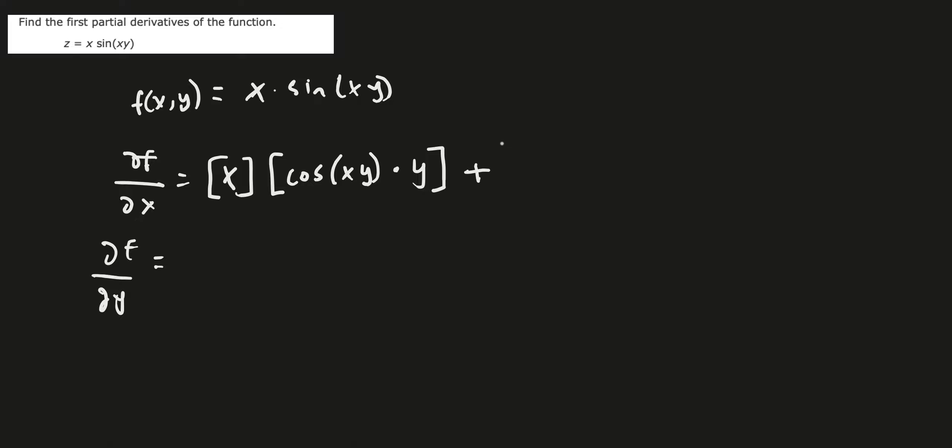But you're not done because you have to add that to the derivative of x. This is the easier one. It's just 1 and then times leaving sine of xy alone. And is this it? Well, really it is because you have x times sine of xy and you're taking the derivative of this stuff. You can do what I just did and it's going to work out. So that's literally your answer.